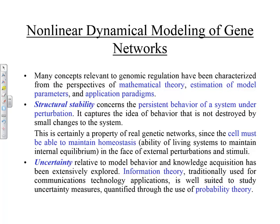One important characteristic of biological systems is the ability to maintain homeostasis — it's extremely stable. Your temperature is 98.6 degrees Fahrenheit; put you in cold weather, your temperature still stays the same. Structural stability is a property of a dynamical system — it concerns the persistent behavior of a system under perturbation. It captures the idea of behavior that is not destroyed by small changes to the system. This is certainly a property of real genetic networks, since the cell must be able to maintain homeostasis — the ability of living systems to maintain internal equilibrium in the face of external perturbations.